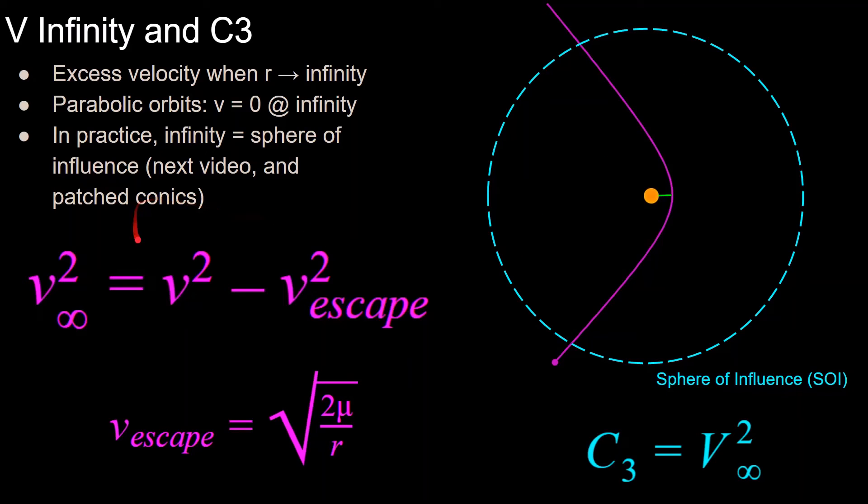So to calculate v infinity at any point, it is equal to the velocity of the spacecraft at any point in the orbit squared, minus the velocity that it would take to escape at any point in the orbit squared, with the velocity of escape is equal to the square root of 2 mu over r, a very simple equation. So at any position r in the orbit, you can find the escape velocity, which will tell you the v infinity of the hyperbolic trajectory.